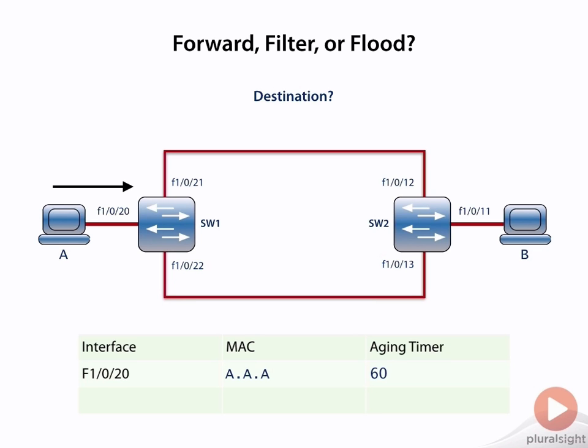So we had an empty MAC address database. So in this case, the question is: should the switch forward, filter, or flood this frame? Well, we know in this case that we need to flood the frame. We flood the frame out of every port except for the one that the frame came in on.